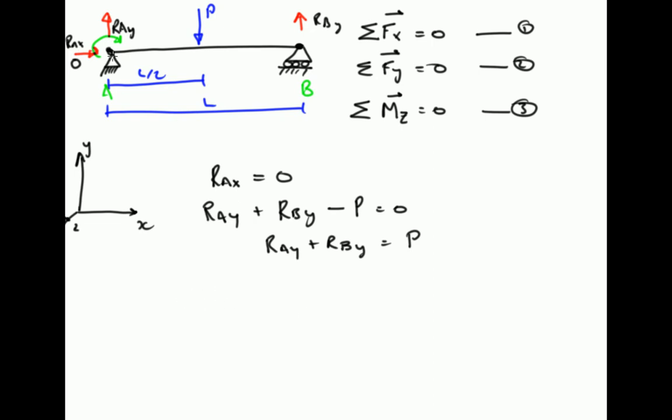So the remaining forces that we have are P, which acts at a distance L divided by 2 from point A, and we're going to take moments as positive in the clockwise direction, so that our moments act clockwise about that Z axis. So clockwise, P times L upon 2, minus anticlockwise, R_By multiplied by L, the distance from point A to the point at which R_By acts perpendicular to the direction of action.